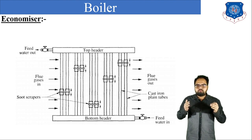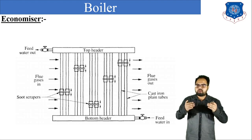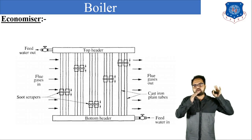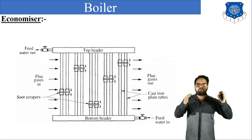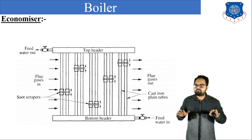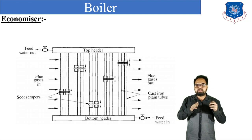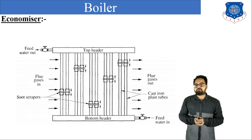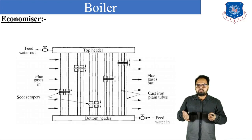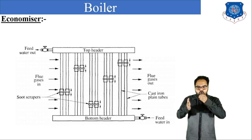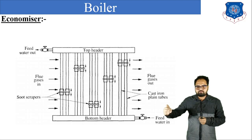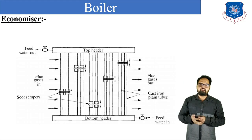We are utilizing the waste heat energy of the flue gas. If we are not using that, it will release to the atmosphere and the overall efficiency of the plant will decrease. By using that waste flue gas energy, we are increasing the efficiency around 6% to 8% with the help of an economizer. In the economizer, there are a number of tubes installed. At the bottom side, a bottom header is provided, and at the top side, a top header is provided.